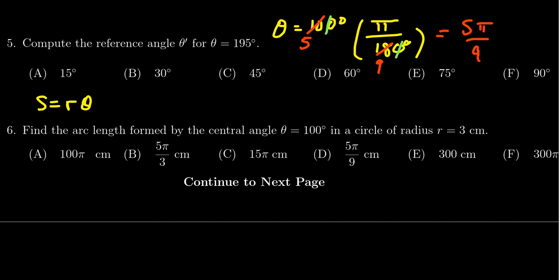To compute the arc length, we take 3 centimeters times 5π/9 radians. Taking 3×5 gives us 15π/9 centimeters. But we want this simplified. Notice that 3 goes into 9 exactly 3 times.